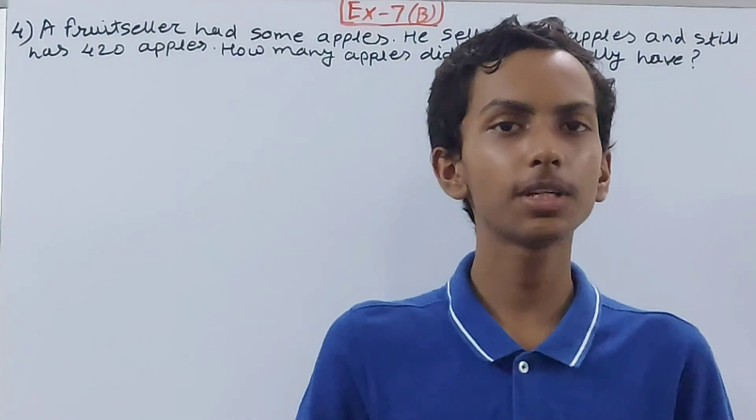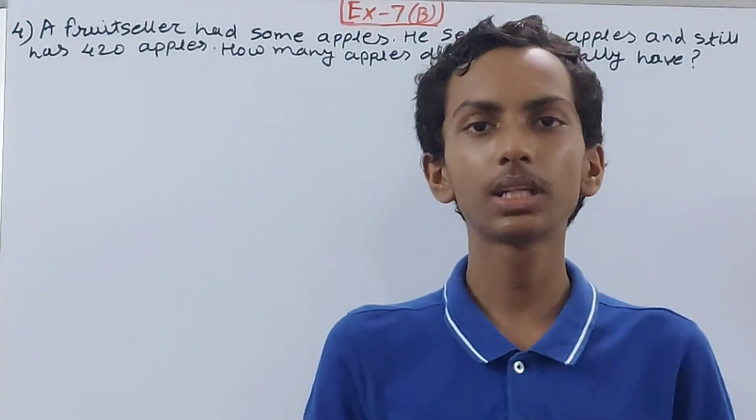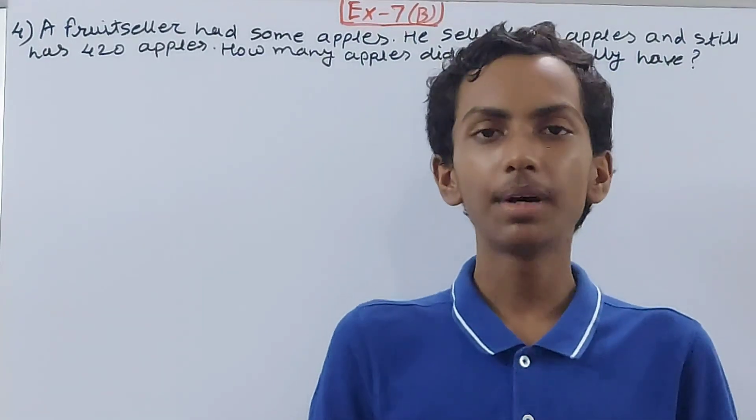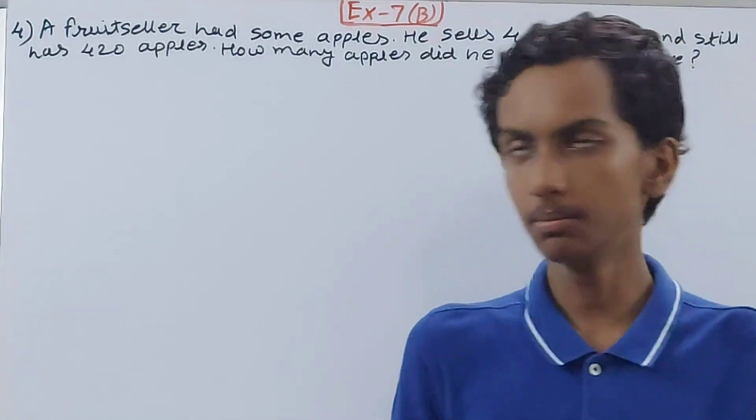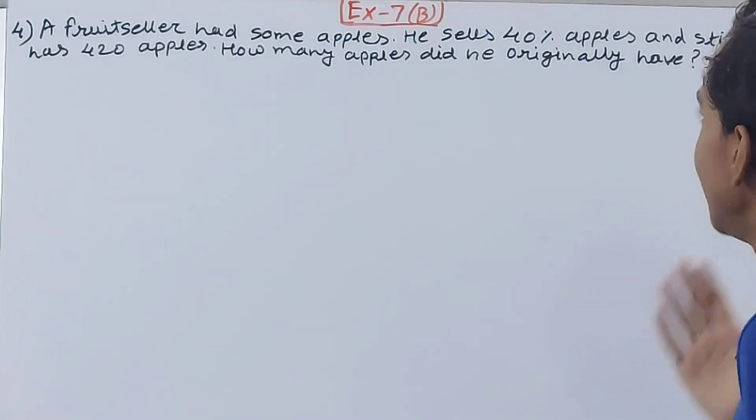Hello friends, welcome back to my YouTube channel and Lock Your Learning. In this video, we are going to solve ICOC Mathematics Class 8, Chapter 7, Percentage, Exercise 7B, Question 4. A fruit seller had some apples. He sells 40 percent apples and still has 420 apples.